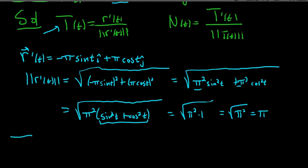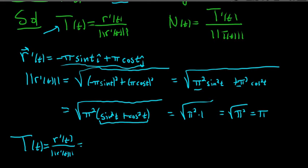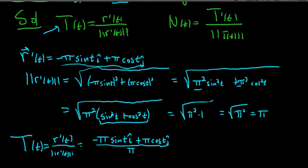Now to find T(t): it's r′(t) divided by |r′(t)|. So that's (−π sin t î + π cos t ĵ) divided by π. The π's cancel, giving T(t) = −sin(t) î + cos(t) ĵ. This doesn't usually happen — it's not usually this nice. I picked this example because it's an easy introduction. Now we can find T′(t) and then divide by its magnitude.